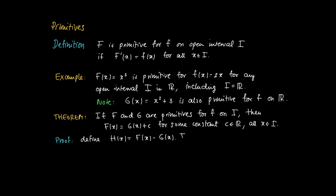Then if we take a derivative, so H'(x), then of course equals F'(x) - G'(x). But since capital F and capital G are primitives of a function f, then we get F'(x) - G'(x) = f(x) - f(x) = 0.